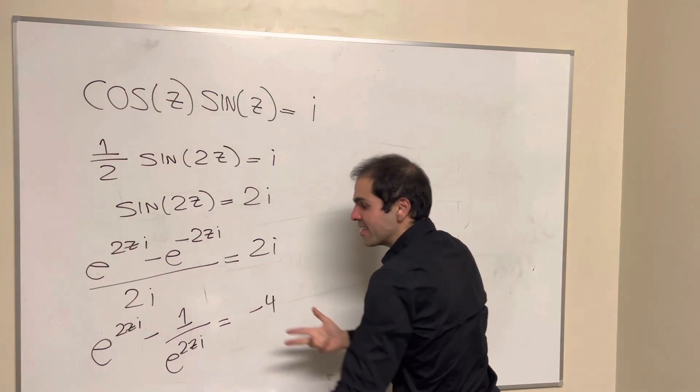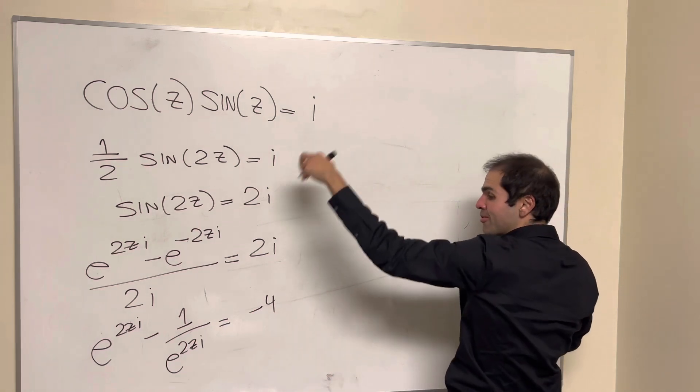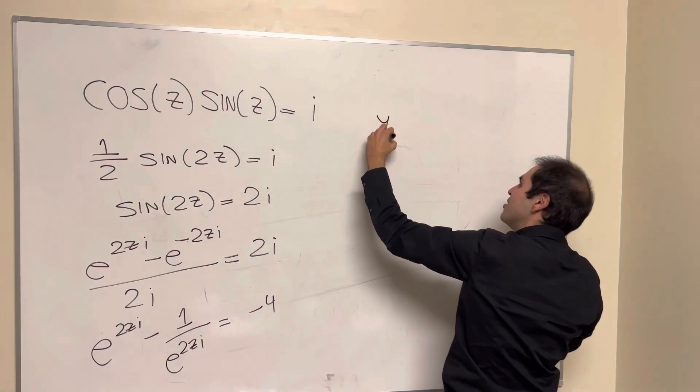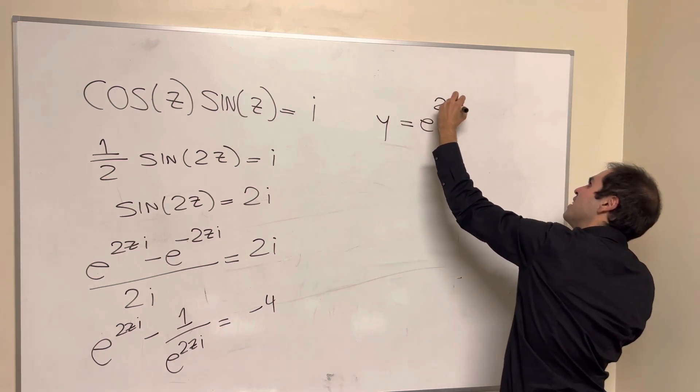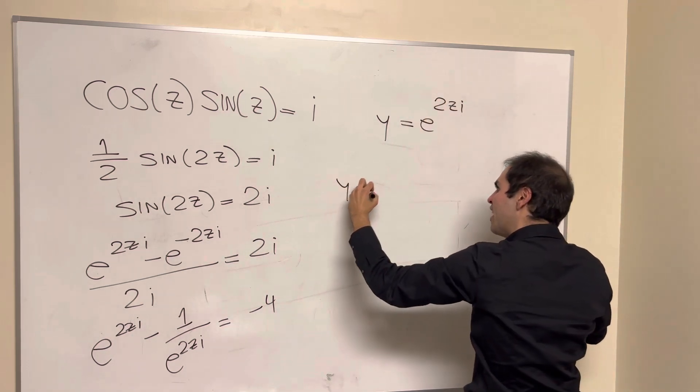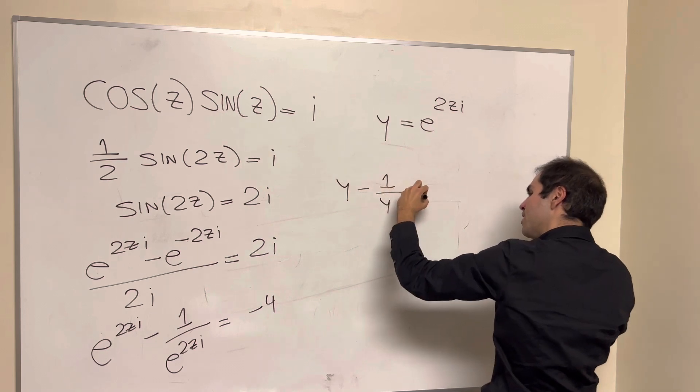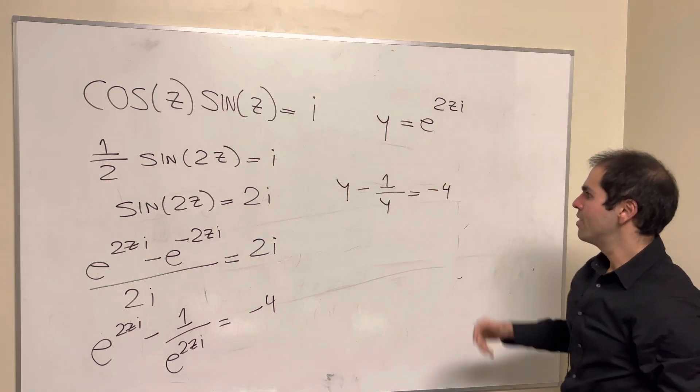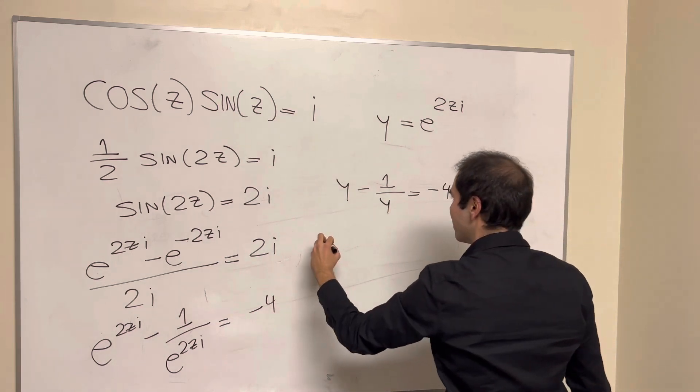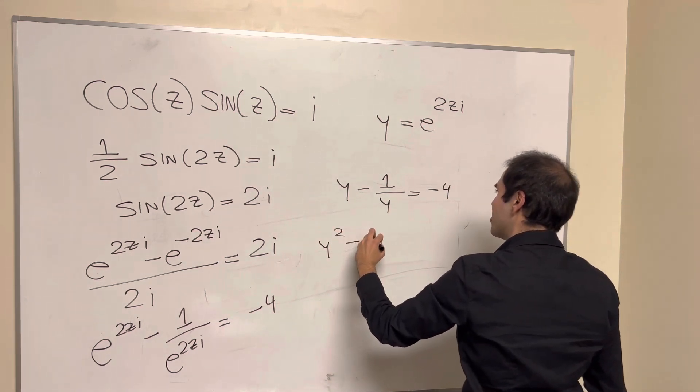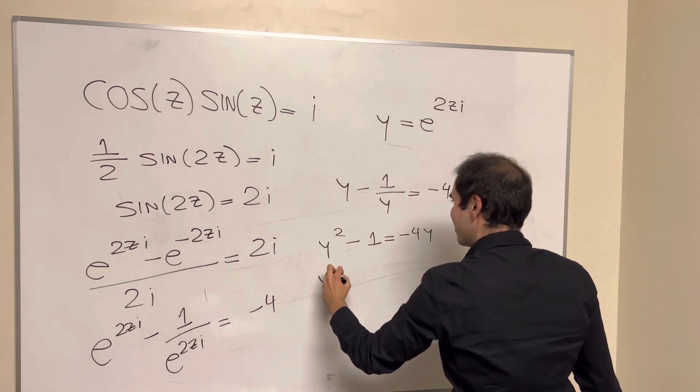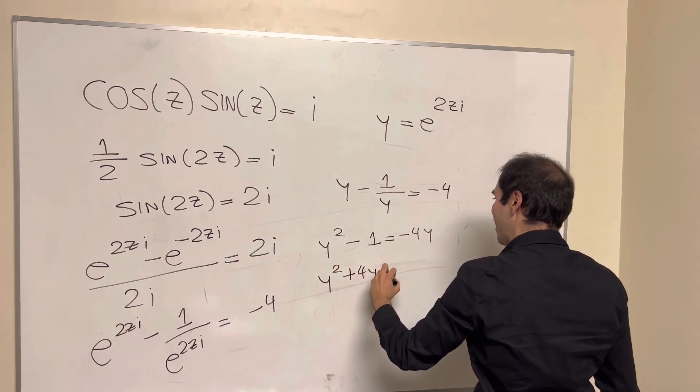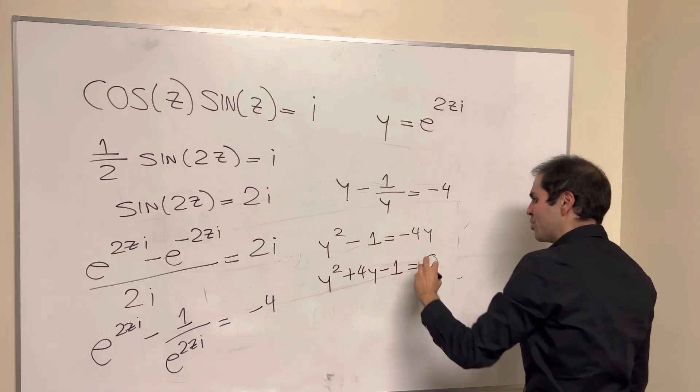But notice, this does become a quadratic equation, because if you let y be e to the 2zi, this becomes y minus 1 over y equals minus 4. And then multiplying this by y, you get y squared minus 1 equals minus 4y. So y squared plus 4y minus 1 equals 0.